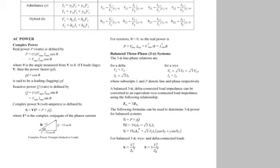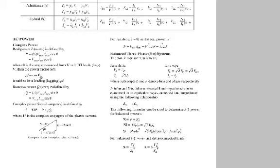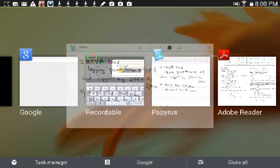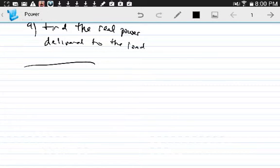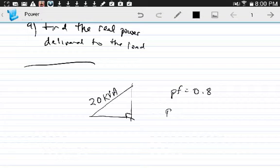We're given 20 kVA, so we have S, and we have the power factor. Given the power factor, we can solve for the angle. Basically, you have a right triangle, and we want to solve for the real part, which is on the x-axis. Let's draw the triangle.